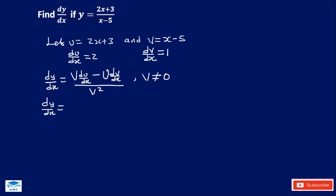Now v is x minus 5, and du/dx is 2. u is 2x plus 3, and dv/dx is 1. All over v squared, where v is x minus 5.